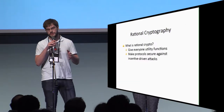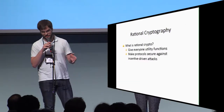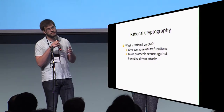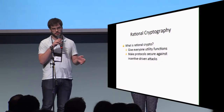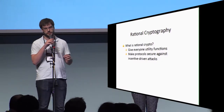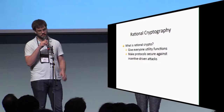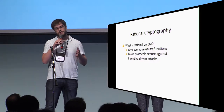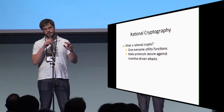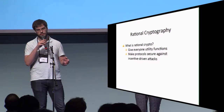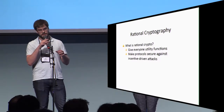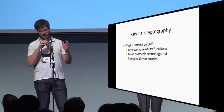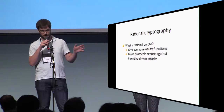Before we begin, I'll remind you what rational cryptography is. Rational cryptography is a paradigm shift from the traditional semi-honest or malicious cryptographic settings. In rational cryptography, we make an assumption that everybody ideally wants to compute some functionality. We don't worry about cases where, say, the NSA might want to break into your bank, because they don't actually want to do that.